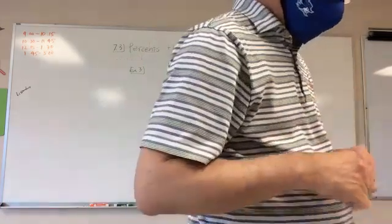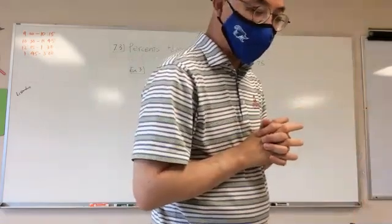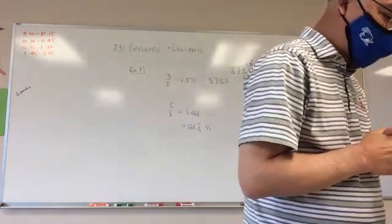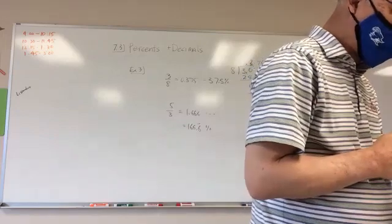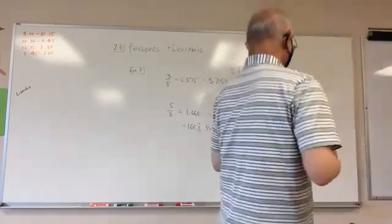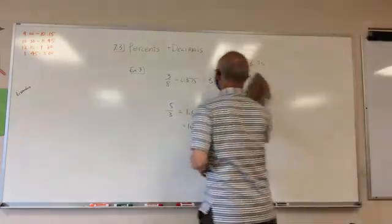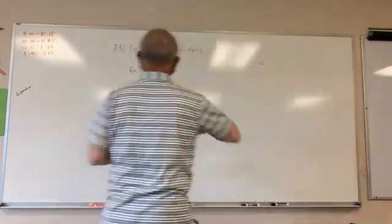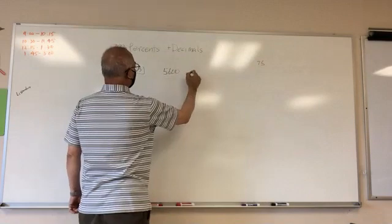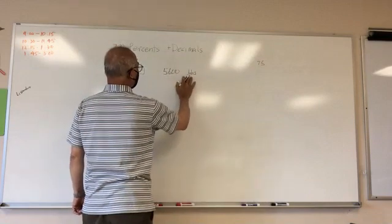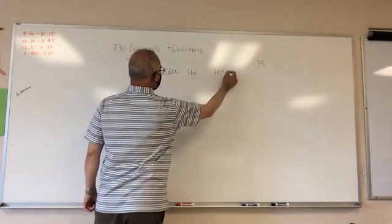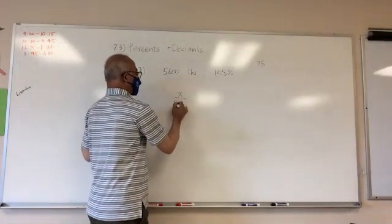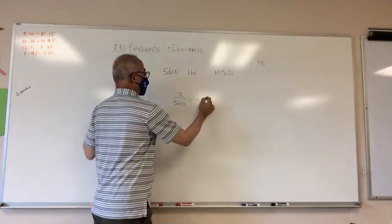Example number four: find the weight of the pygmy described in page 366. So the pygmy hippo is 10.5 percent of the common adult hippo's weight. Common adult is 5,600 pounds. So basically what we're trying to find is what is 10.5 percent of 5,600 pounds.